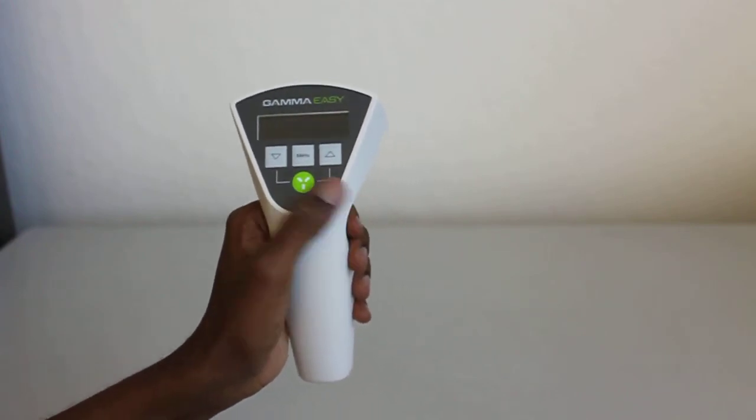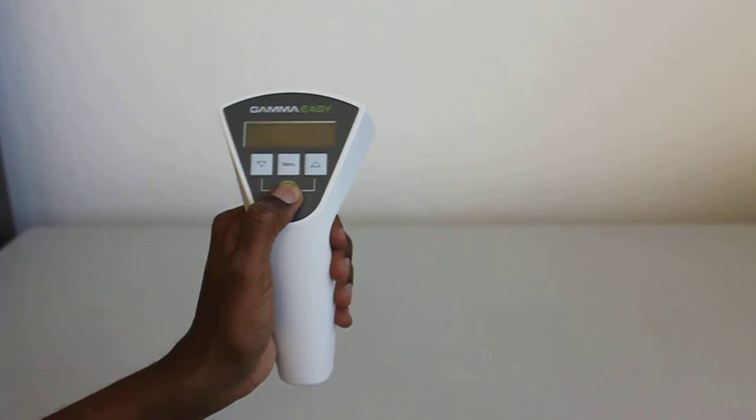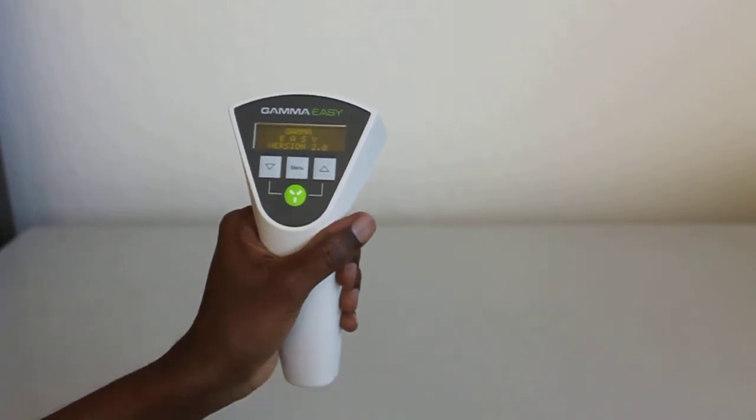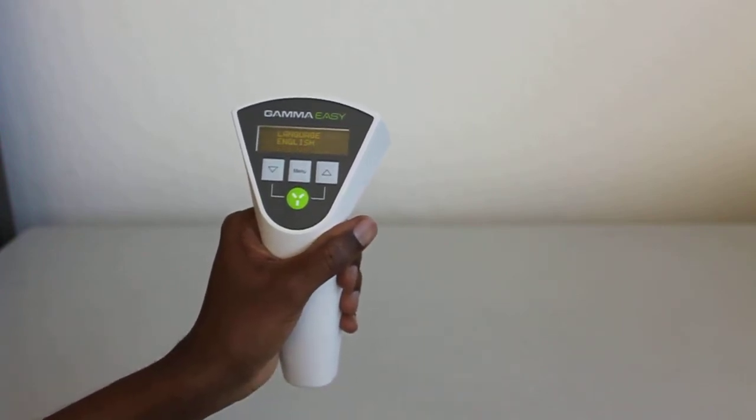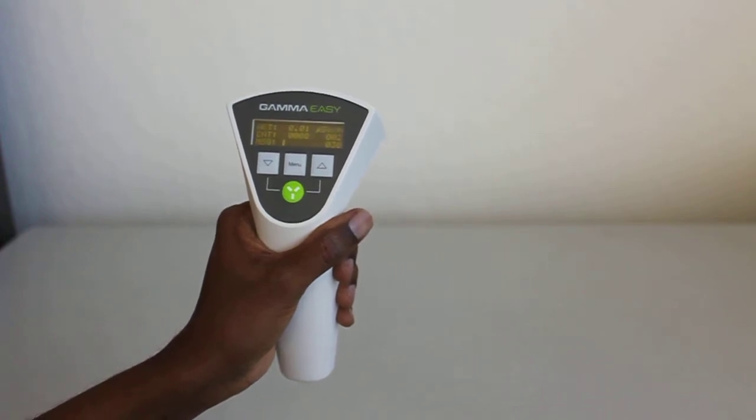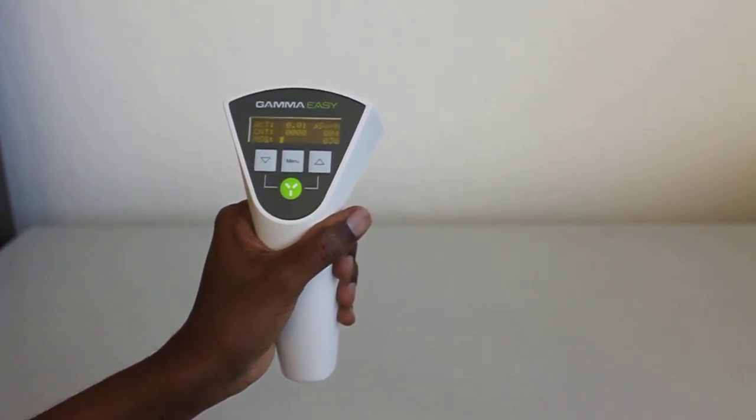Once again, to turn it on, hit the green button. You'll see Gamma Easy version 2.0, you'll see language English or it could be German, and then you'll see a battery test which should read okay.